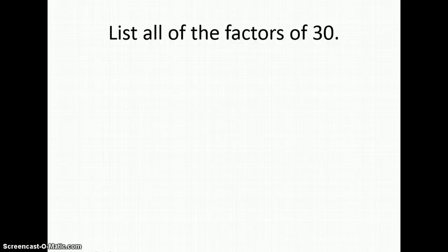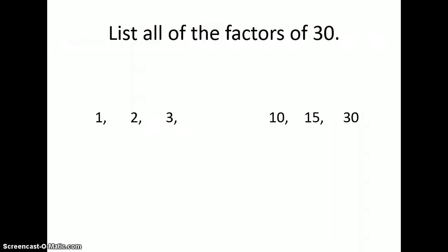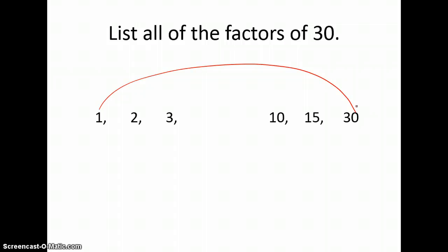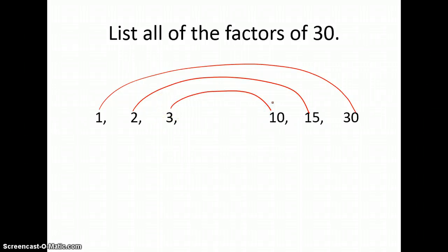Now let's talk about listing factors. We're going to list all the factors of thirty. We begin with the smallest possible factor, which is one — one is a factor of every whole number. One times thirty equals thirty. Then two: two times fifteen equals thirty. Then three: three times ten equals thirty. Notice the listing pattern: one and thirty are partners on the outside, two and fifteen come next, then three and ten. This creates a rainbow with the factors.